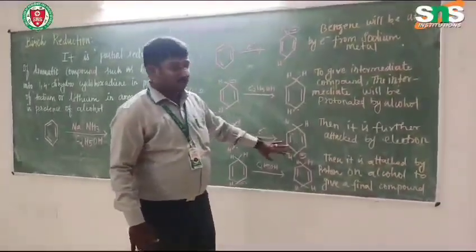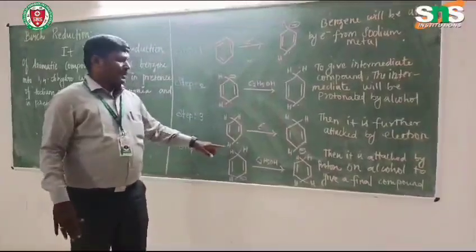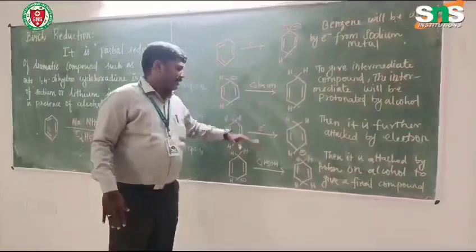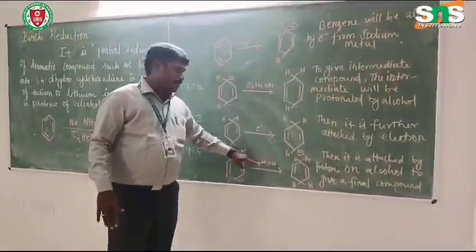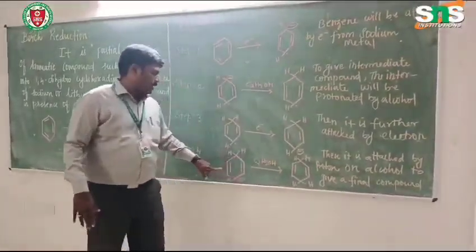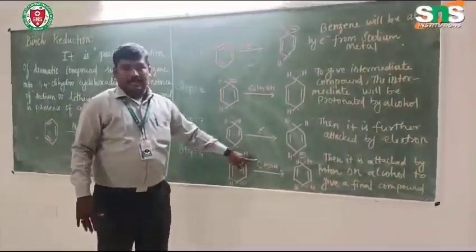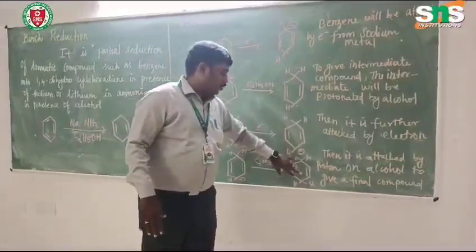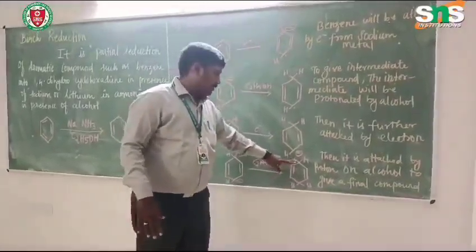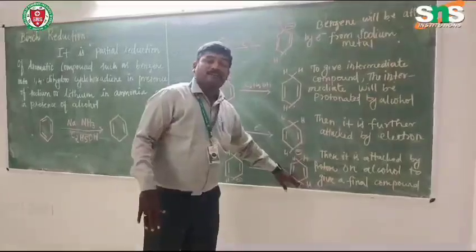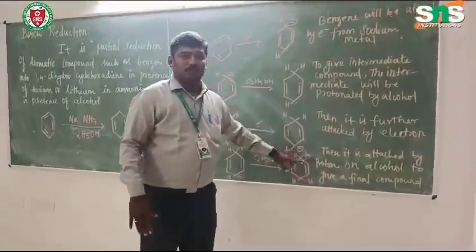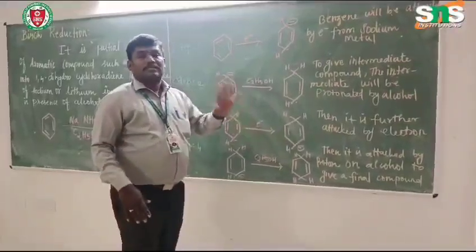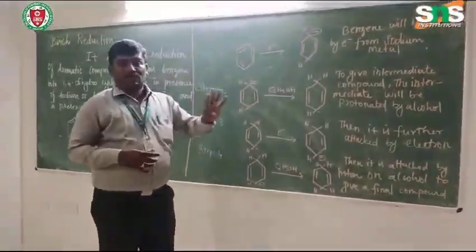This carbanion intermediate is then attacked by a proton — that is, electron attack followed by protonation. The alcohol provides the proton for this final protonation step, adding two hydrogens at the first and fourth positions to give the final product.